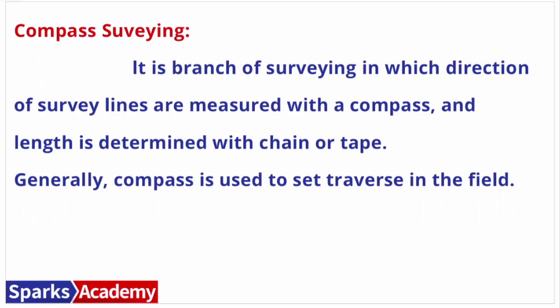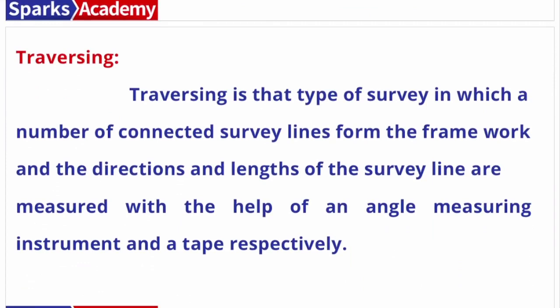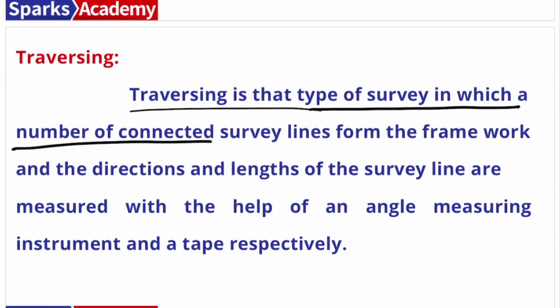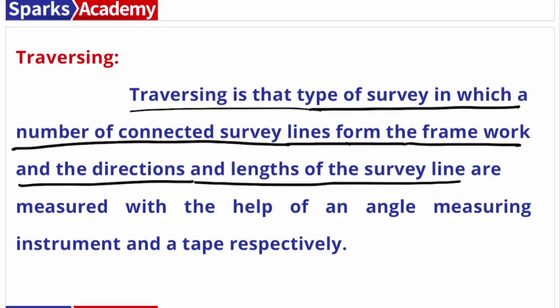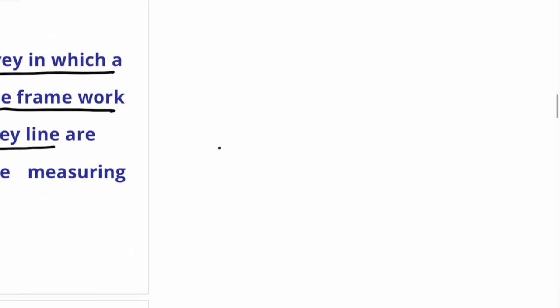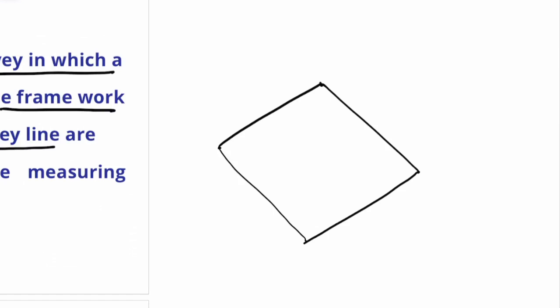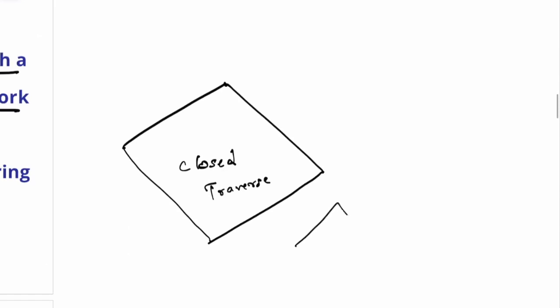For length measurement we use chain or tape, and for direction we use a compass. In traversing, a number of connected survey lines form the framework, and the directions and lengths of the survey lines are measured. Traversing can be open traverse or closed traverse. Closed traverse is used for land boundary measurement, while open traverse is used for road networks.